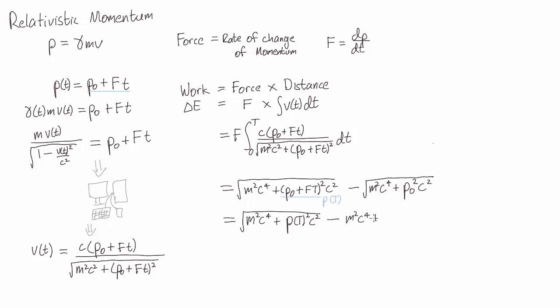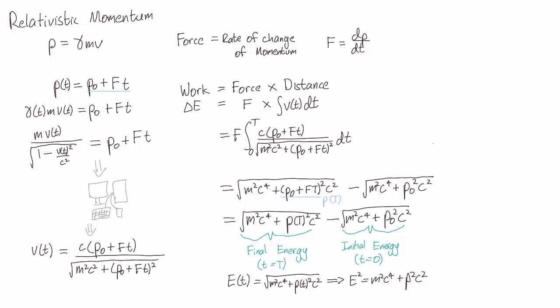So change in energy of an object is its final energy minus its initial energy. So maybe the first term here represents the final energy of the object, and the second term represents its initial energy. This would give us the formula that the energy at time t is the square root of m squared c to the 4 plus p squared c squared. Or in other words, squaring both sides and leaving the time dependence of energy and momentum implicit, e squared equals m squared c to the power of 4 plus p squared c squared.